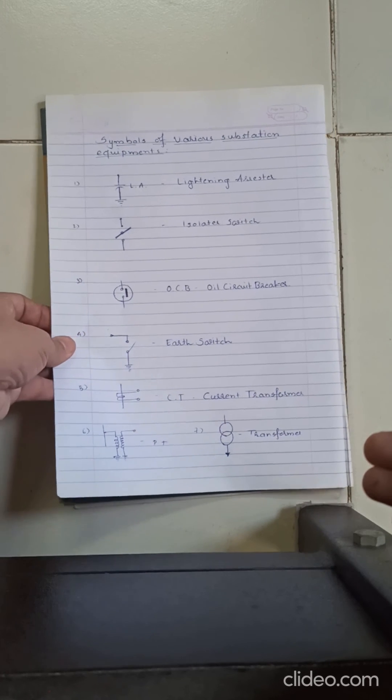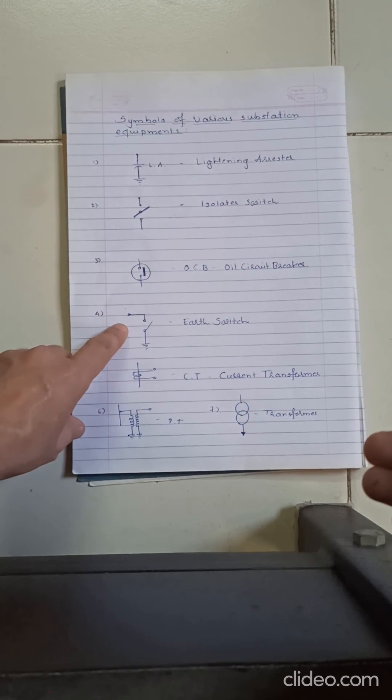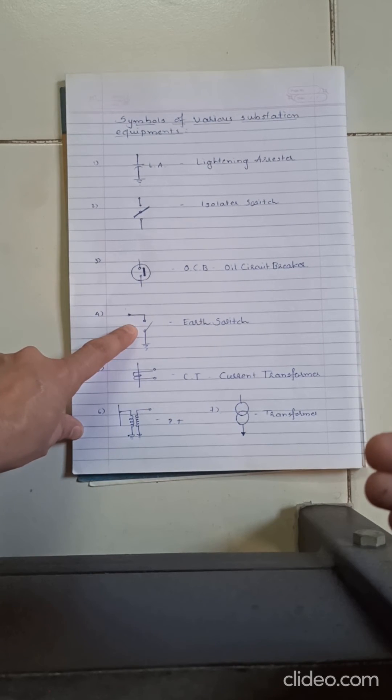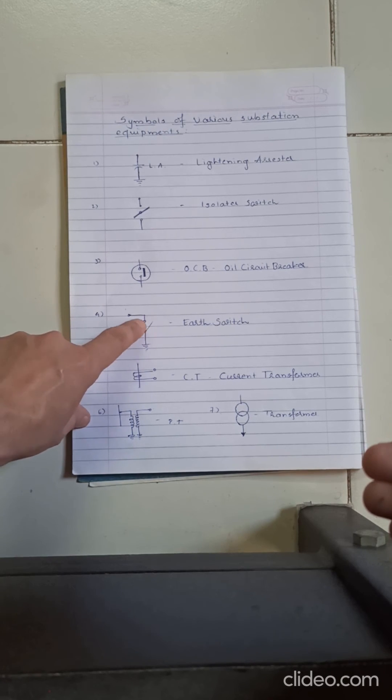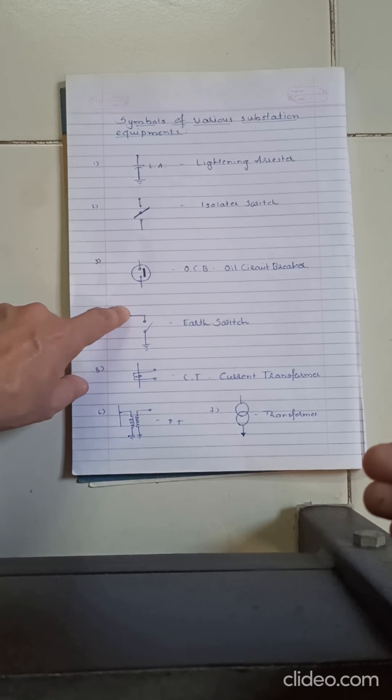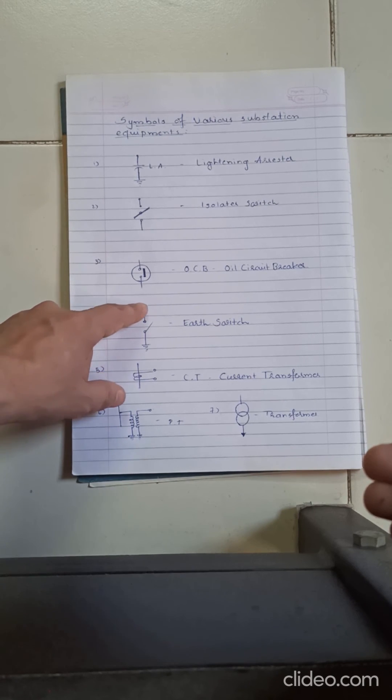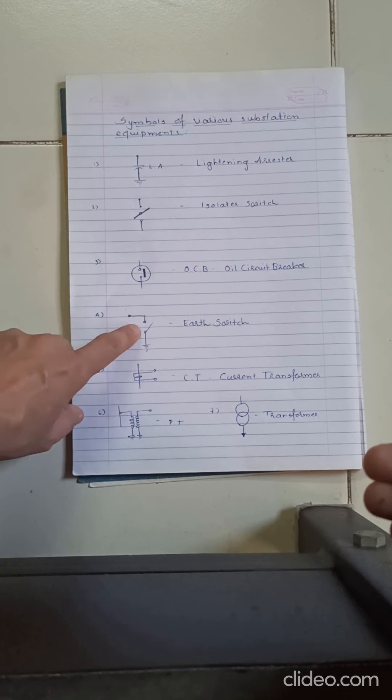The fourth one is earth switch. Earth switch is used to ground the charges of any equipment directly to the earth. So right now the switch is shown open. When the switch is closed, the charges of the equipment which is connected to this point directly goes to the earth. That's why it's called earth switch.